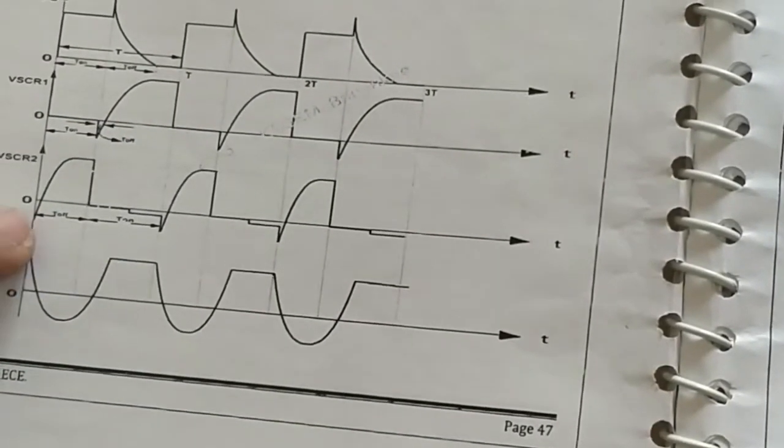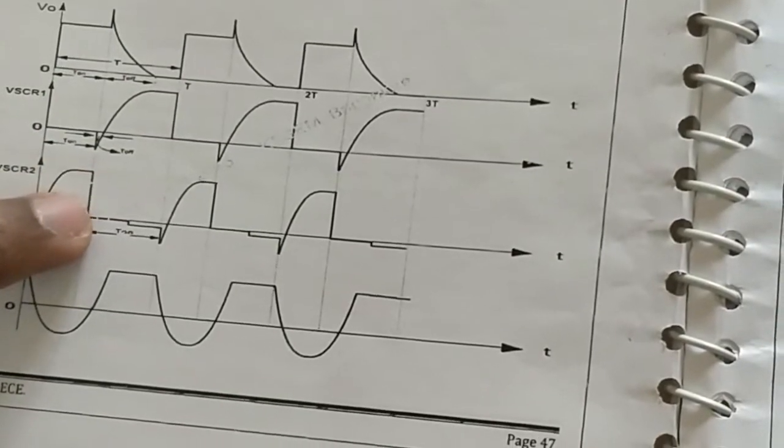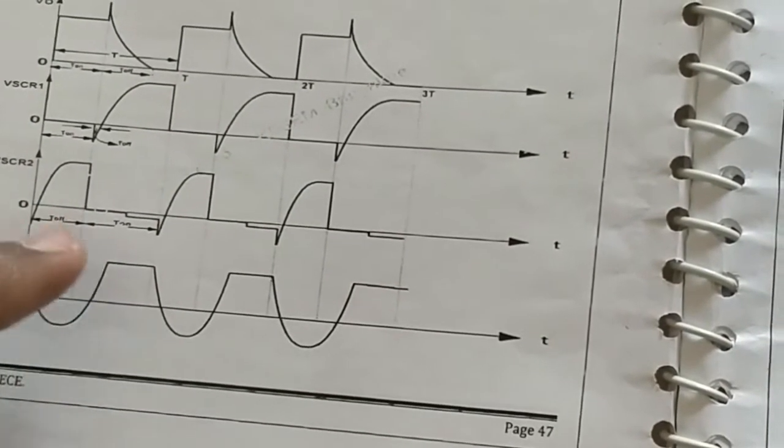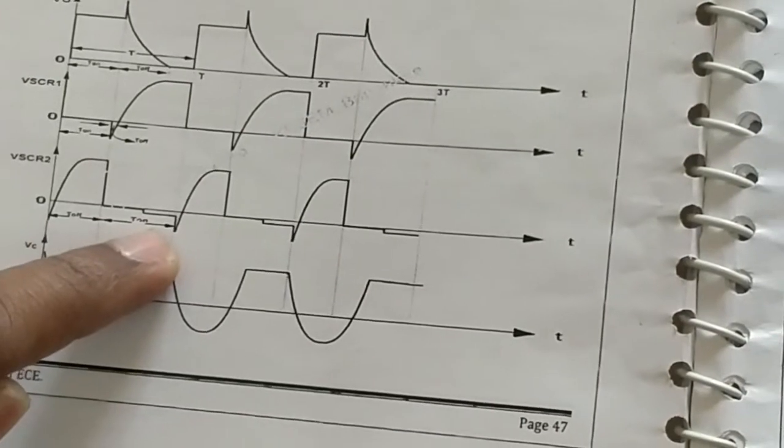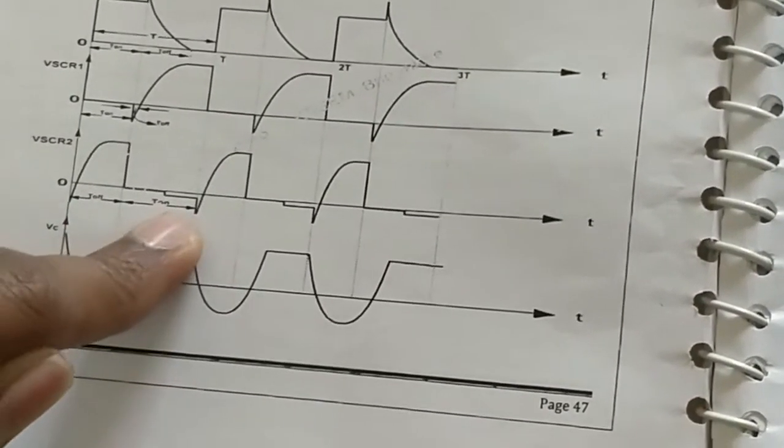But for VSCR2, from the negative line till the peak where it comes down again, it is T off. And then when the next cycle, till the next cycle starts again, it is T on.